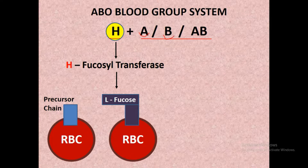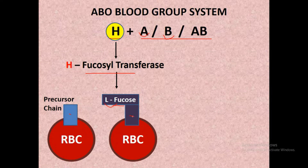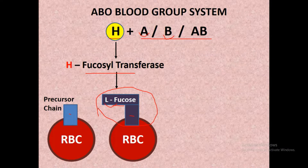The H gene encodes Fucosyltransferase enzyme, which transfers L-fucose to this precursor chain. This L-fucose plus precursor chain collectively is known as H substance. The synthesis of H substance is essential for the synthesis of antigen A or antigen B. Without H substance, neither antigen A nor antigen B synthesis takes place on the surface of RBC.